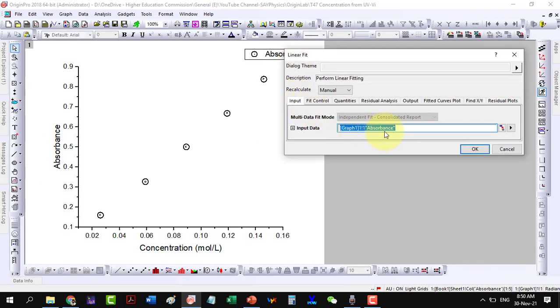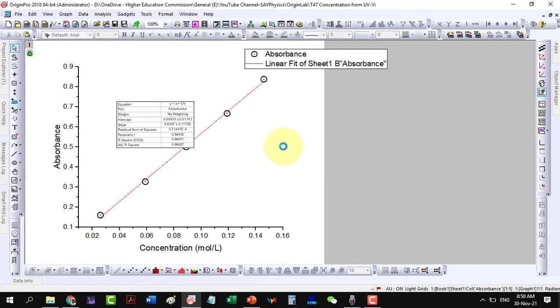In the appeared menu, don't change anything and click OK. It linearly fitted the data points. Let me increase the width of the fitting line to make it more evident.